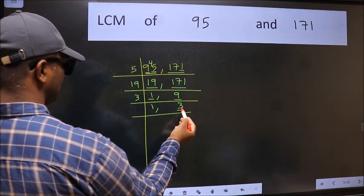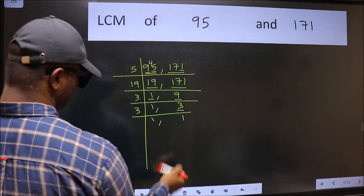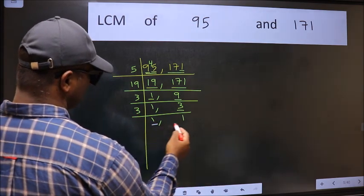Now here we have 3. 3 is a prime number, so 3 once 3. So we got 1 in both the places.